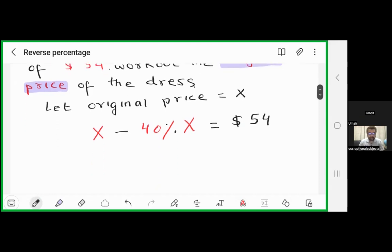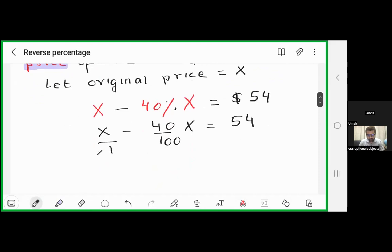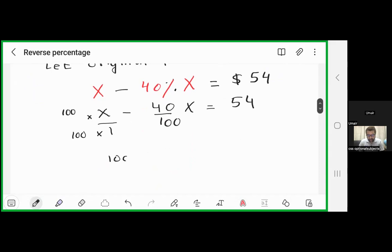Now we have to find x from here. This is x minus 40 percent is 40 out of 100, is equal to 54. Take LCM on the left side, multiply by 100 in the denominator and in the numerator, so my answer will be 100x over 100 minus 40x over 100 is equal to 54.